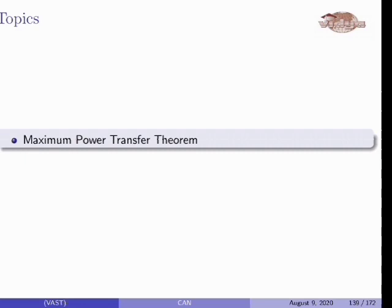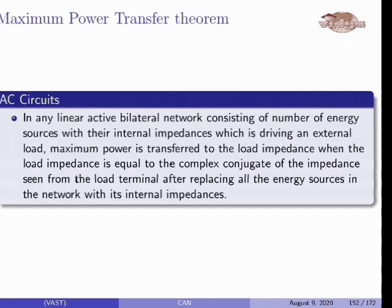Three special cases of the load impedance are also discussed. Here you can find the definition of maximum power transfer theorem for AC circuit. In any linear active bilateral network consisting of a number of energy sources with their internal impedances, which is driving an external load, the maximum power is transferred to the load impedance when the load impedance is equal to the complex conjugate of the impedance seen from the load terminals after replacing all the energy sources in the network with their internal impedances. This is the maximum power transfer theorem for AC circuit. How is it different from DC circuit? In DC circuit, there is only resistance, but here it becomes impedance.